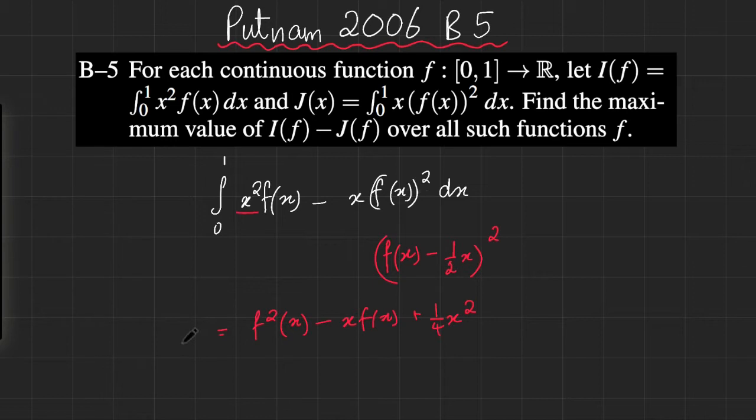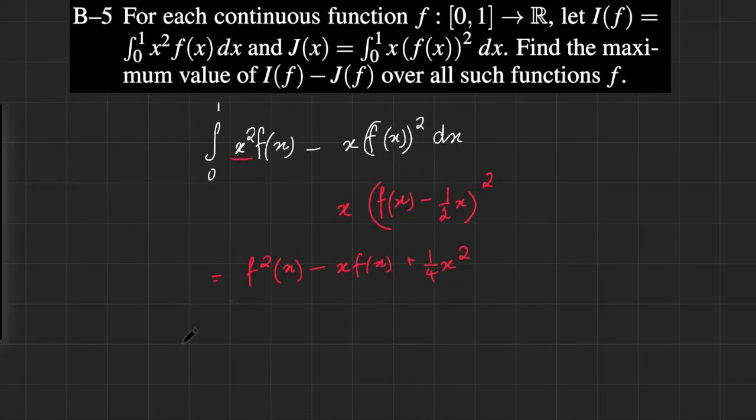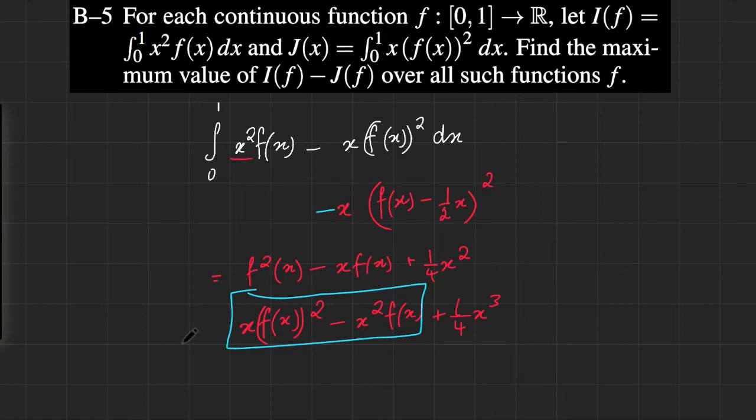Now you see that what we have is x times f(x)² and x² f(x), it looks like we're just missing an x here. So what if I multiply this whole thing out by x? That would then expand out to give x f(x)² - x² f(x) + ¼x³, which is at least part of what we have, except it's just reversed. We can add a negative sign to account for that.